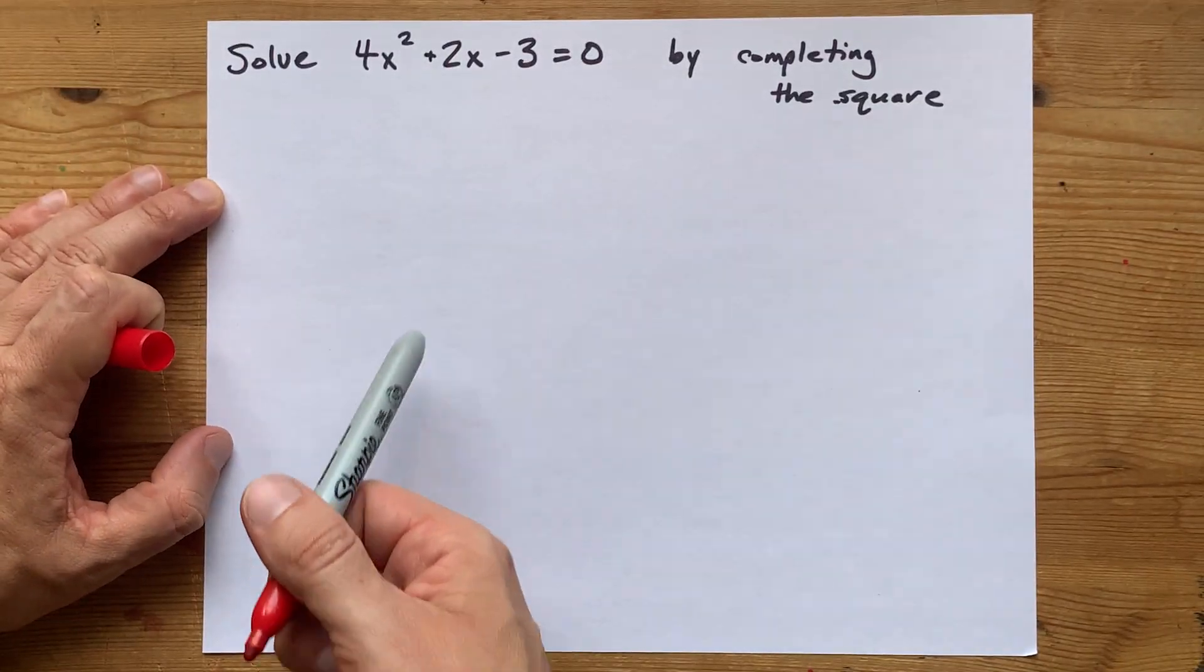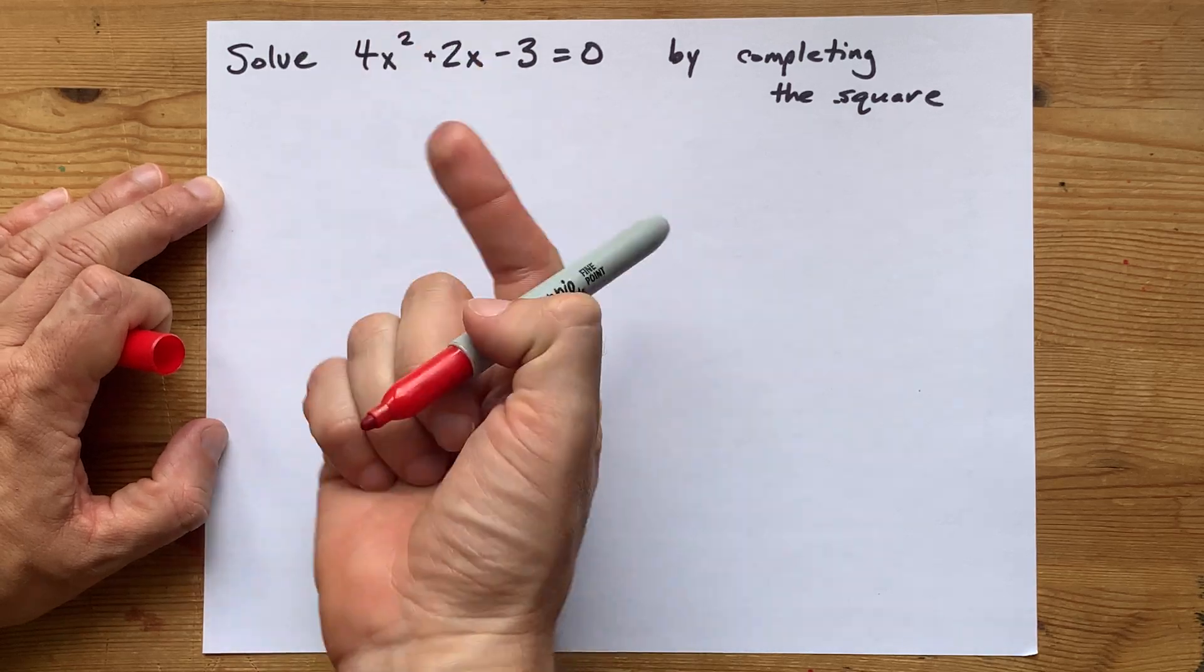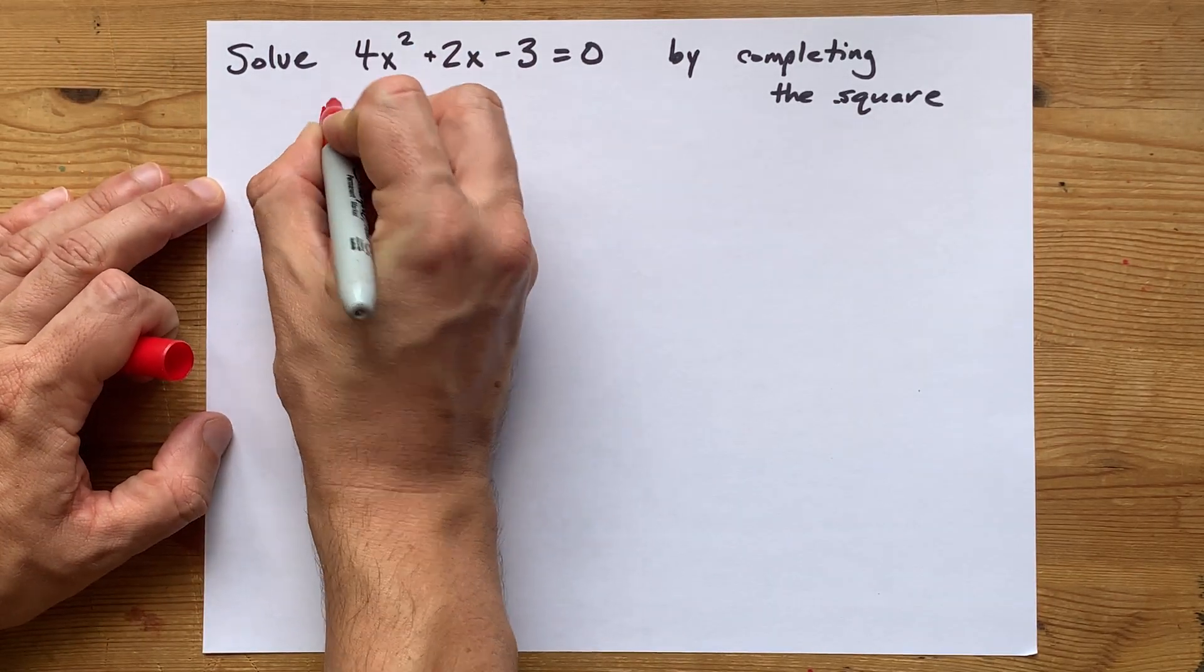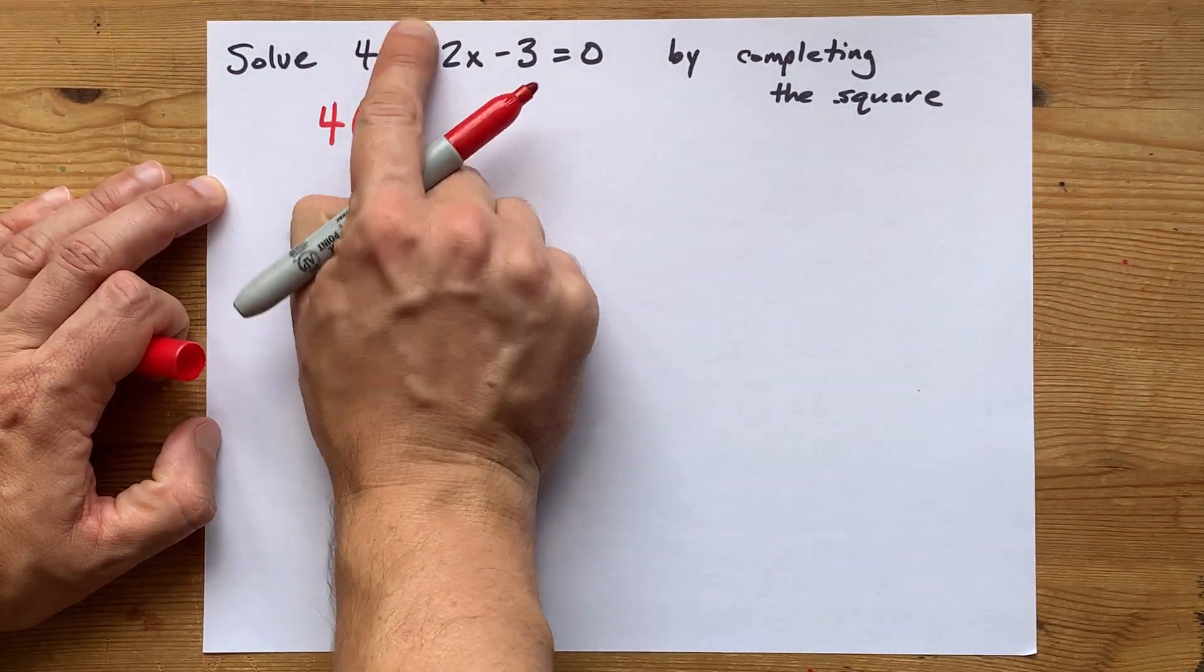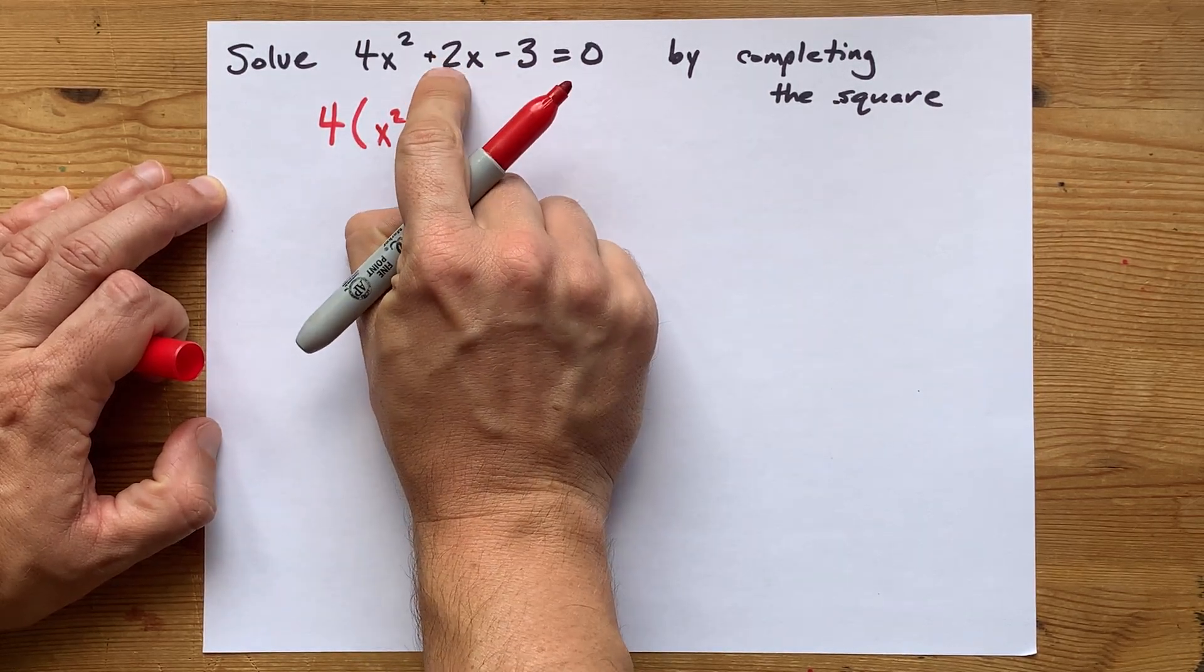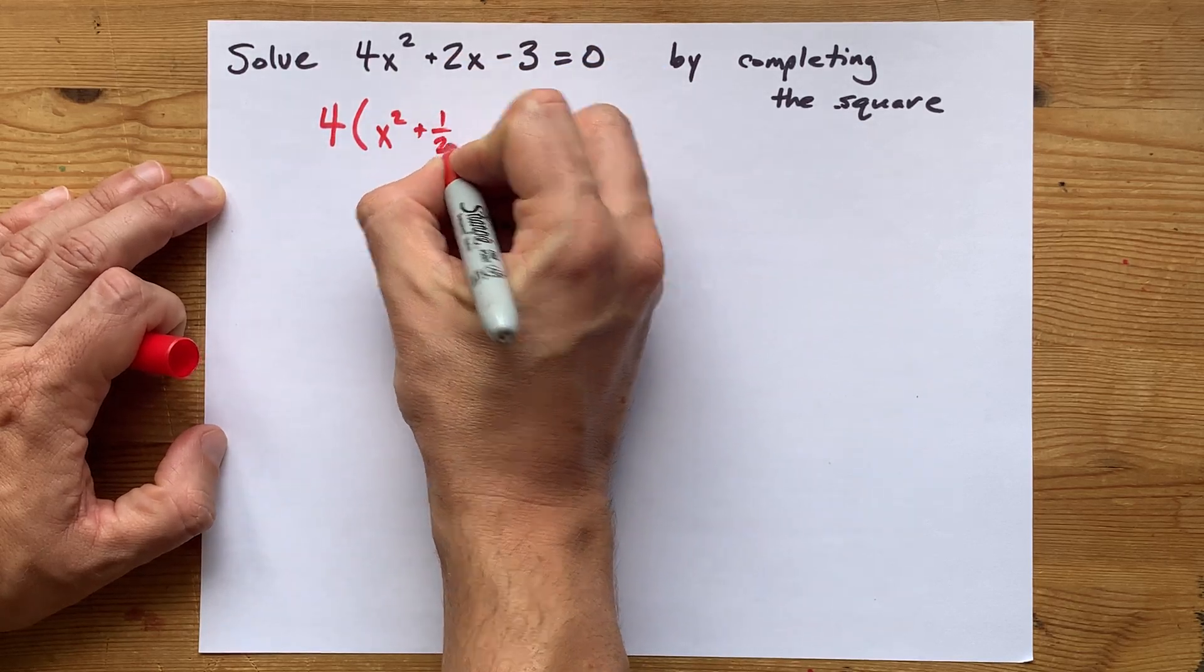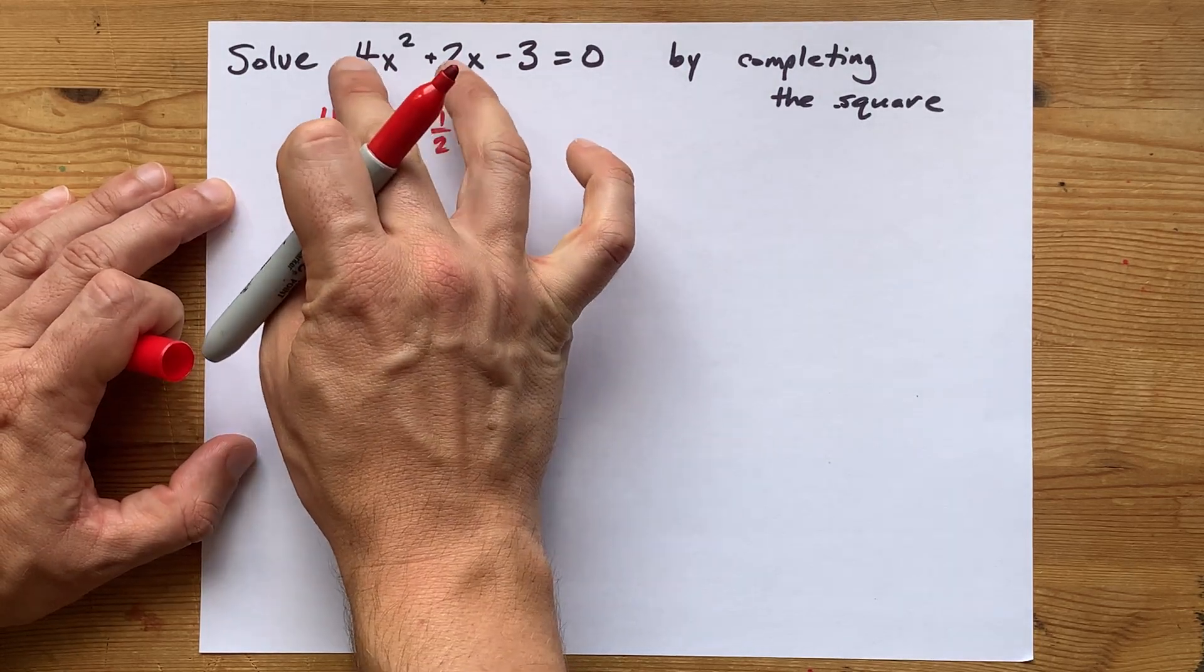My method for completing the square involves step one, whatever's in front of x squared, factor that out of the first two terms. So I'm going to write four with an open bracket. I'm going to divide this by four. That's easy, actually. That just leaves me with x squared, and I'm going to divide that by four as well. Two divided by four is a half, so I'm going to write a half x.